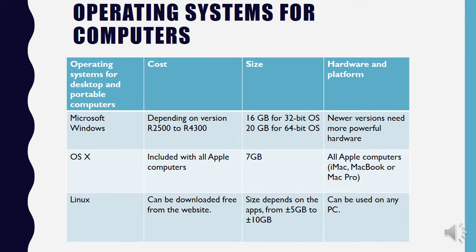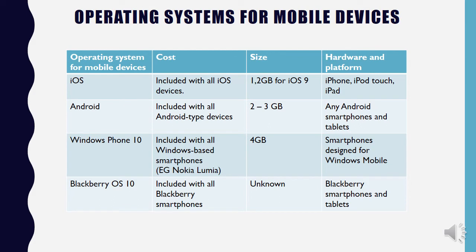OS X is included with Apple computers and needs 7 gigabytes of hard drive space. Linux is a free operating system and its size ranges from 5 to 10 gigabytes. For mobile devices such as tablets and smartphones, iOS comes on iPhones, iPods, and iPads. Android is another operating system with many versions and is included with all Android-type devices. Windows Phone 10 is included with all Windows-based smartphones — the Nokia Lumia being the best known — and BlackBerry OS 10 is made for BlackBerry smartphones and tablets.